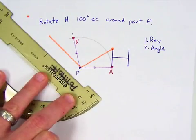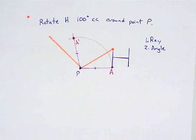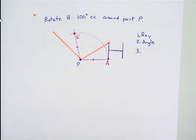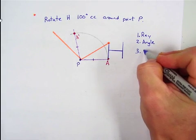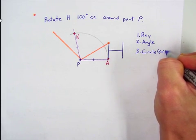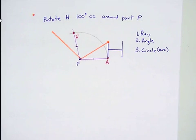And then we make our second ray at least as long as this. Does that look good? Yeah, it looks good. And then number three, we make a circle. We're not making the whole circle, which is called an arc. But it's the same concept.